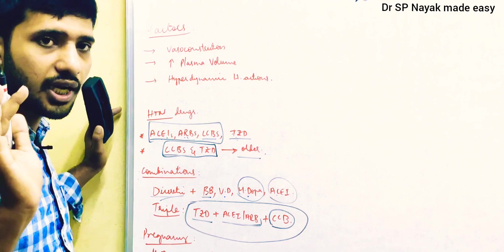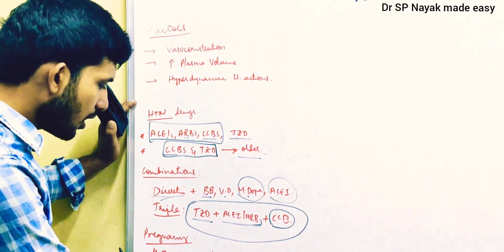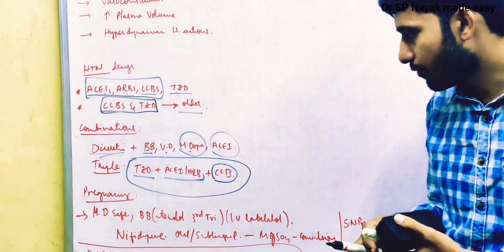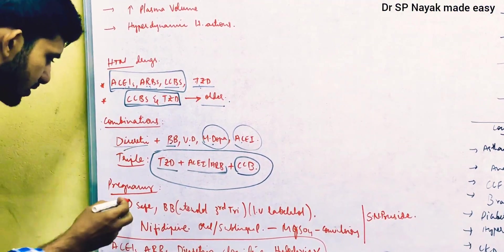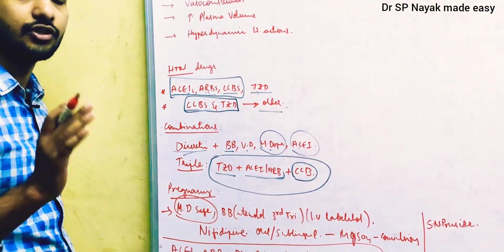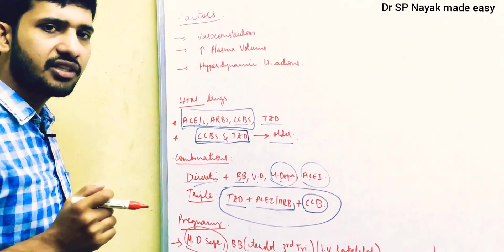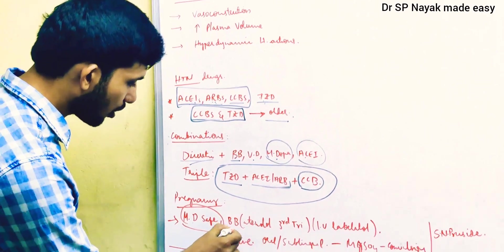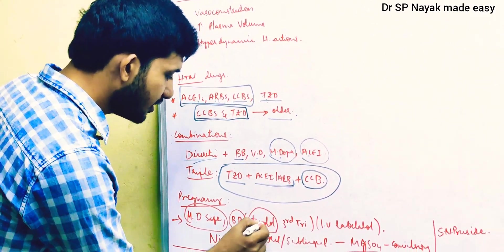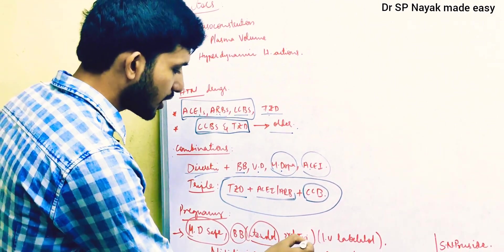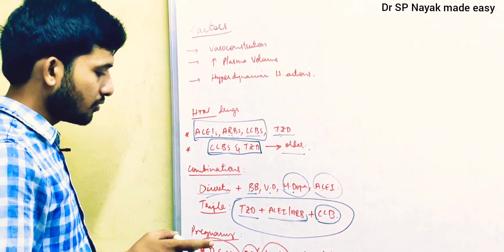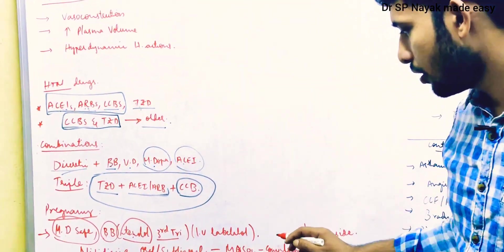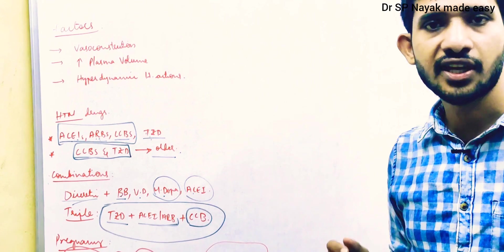In pregnancy, methyldopa is the drug of choice — it is the safest drug in pregnancy. If the patient is not treated with methyldopa, we can go with beta blockers. From beta blockers, atenolol is the drug of choice in pregnancy, but atenolol should be given only in the third trimester. IV labetalol is also a safe drug in pregnancy.